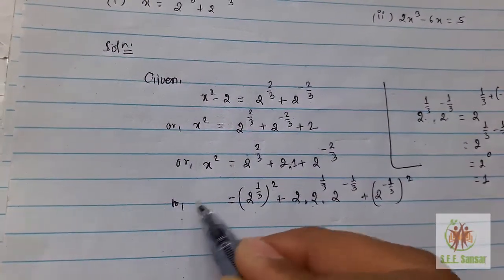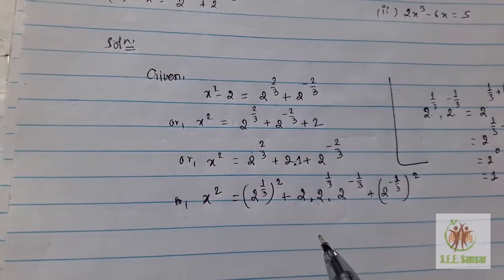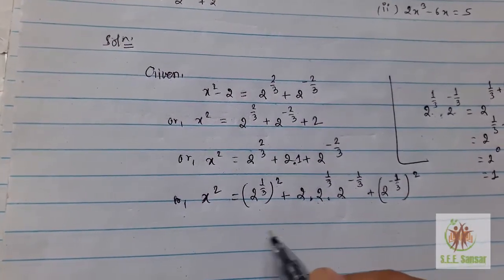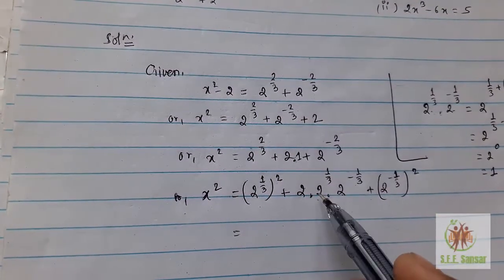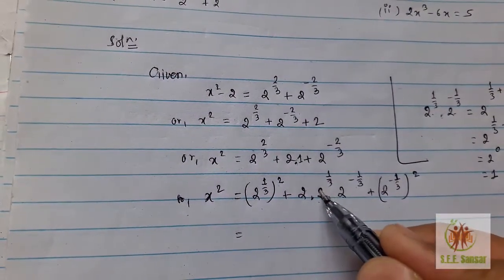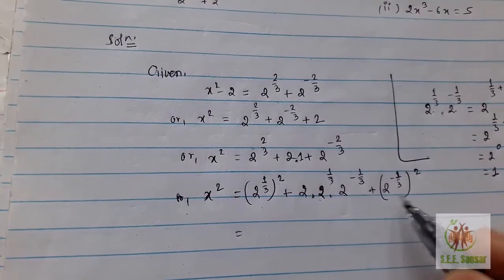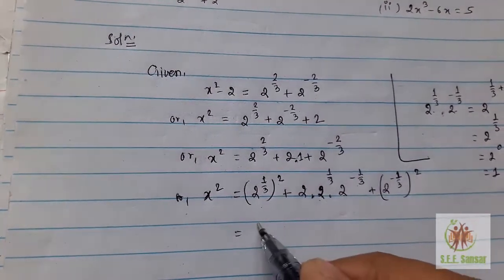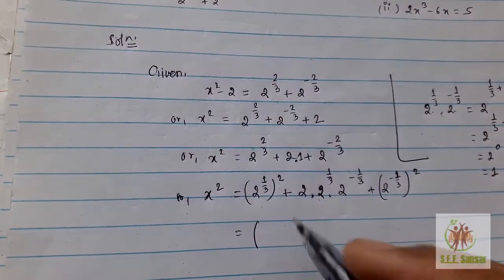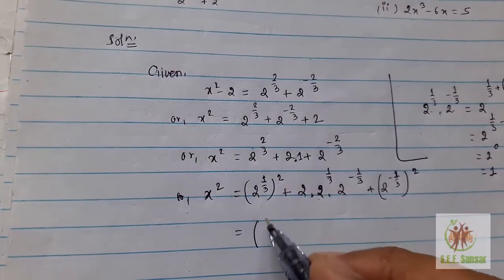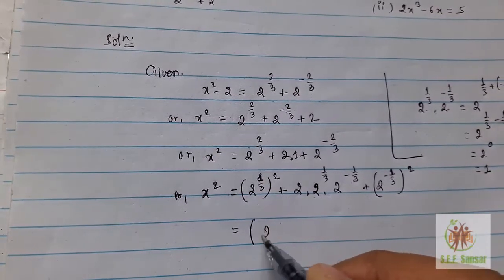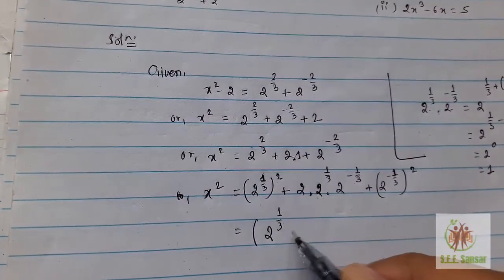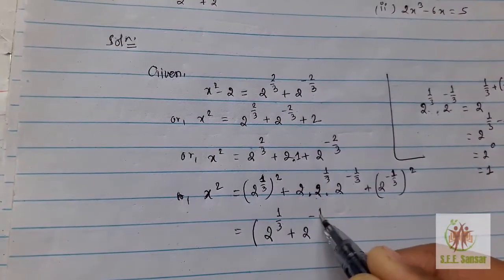So x² = a² + 2ab + b². We have the formula (a + b)². a is 2^(1/3) and b is 2^(-1/3). So we can write x² = (2^(1/3) + 2^(-1/3))².